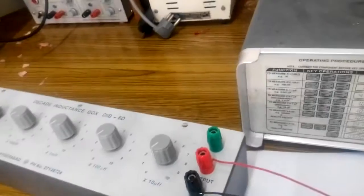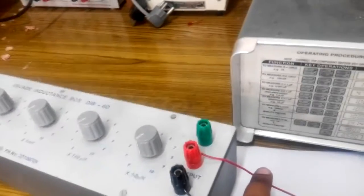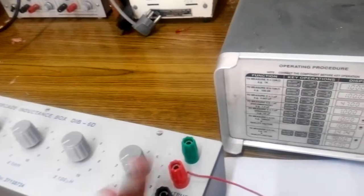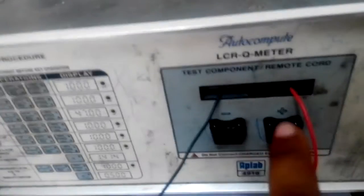Okay, continuation of the experiment: measurement of inductance using Q-meter. For the measurement of inductance using Q-meter, you need to connect two wires to your decade inductance box, positive and negative, and connect them to the two slots over here.